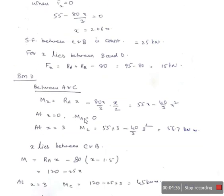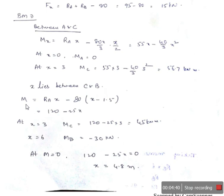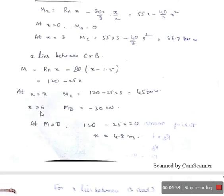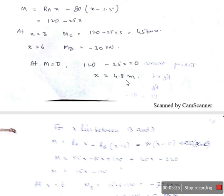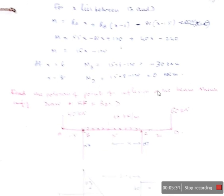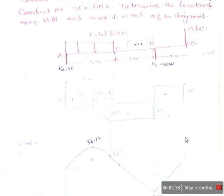When X lies between C and B, the general bending moment equation is RA into X minus 80 into (X minus 1.5), which simplifies to 120 minus 25X. At X equals 3 (point C) and at X equals 6 (point B), Mb is minus 30 kilonewton meters. Setting 120 minus 25X equals 0 gives X equals 4.8 meters — this is the point of contraflexion. We then calculate bending moments at the different points and draw the shear force and bending moment diagrams.